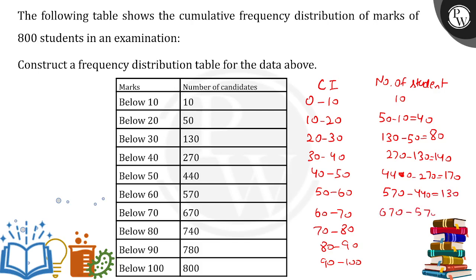And like this we can subtract the previous frequencies and we will get the frequencies. The next one will come out to be 100, then the next one will come out to be 40, then the next one will come out to be 20. And this is your frequency distribution table.